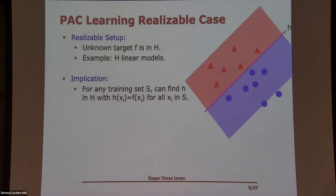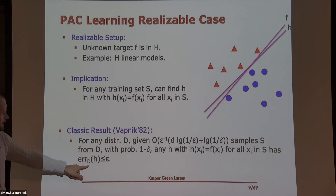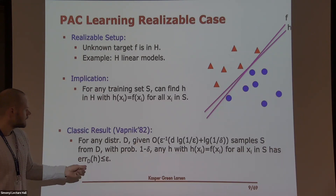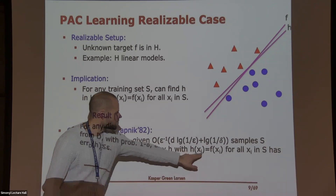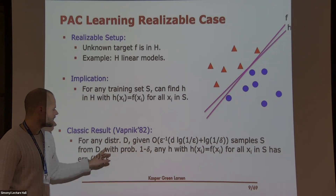The problem is there can be multiple different hyperplanes that get everything correct. Even though I output something that gets all the training data correct, it's not clear that it will get new data items correct. The classic learning theory result from the 80s says: if I want to output a hypothesis with error at most epsilon under D, how many samples do I need? With enough samples, all I need is to find any hypothesis that gets all the training labels correct — with probability 1 minus delta over the training data. The 1 minus delta accounts for the possibility of an unrepresentative training set.